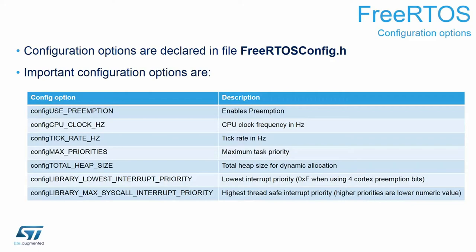The heap stores all RTOS component data — tasks, semaphores, queues, mutexes, software timers — all of those require some space in RAM to store temporary variables, configuration, and parameters. What is important is that the total heap size is given in bytes, while other components like the stack size of the tasks is given in words. Please be aware of these differences, especially if you edit FreeRTOSConfig.h manually.